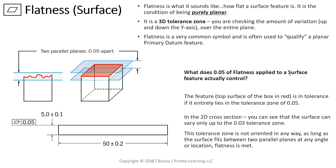This one seems to make sense to most everybody. We see a flatness callout on this drawing example — it's extended off of the surface, away from the feature of size, not in line with it in any way. So this one is just flatness on a surface. It's a 3D tolerance zone with two parallel planes. It states 50 microns for flatness, so the total distance between the two planes is 50 microns. This only controls the top surface it's pointing to — it's not relative to any datums.